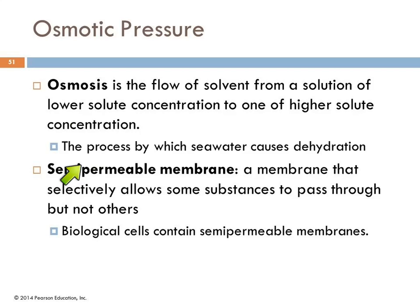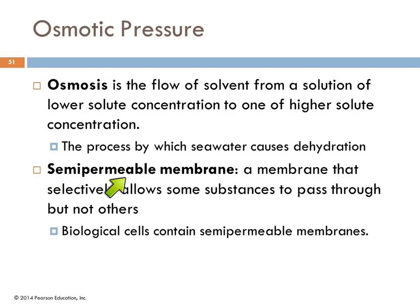Osmosis is the process by which drinking seawater causes dehydration. A semi-permeable membrane selectively allows some substances to pass through but not others. Biological cells contain semi-permeable membranes that keep them intact—without them, you'd just be a massive pool of goo.